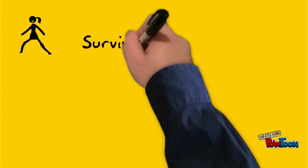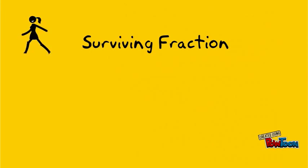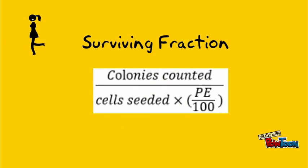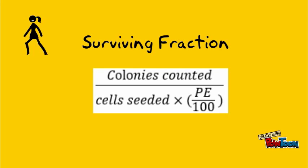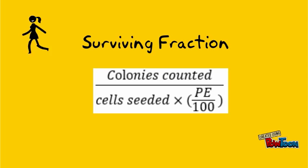Next, Surviving Fraction. Surviving Fraction is the colonies counted, divided by the number of colonies planted, with a correction for the plating efficiency, PE.